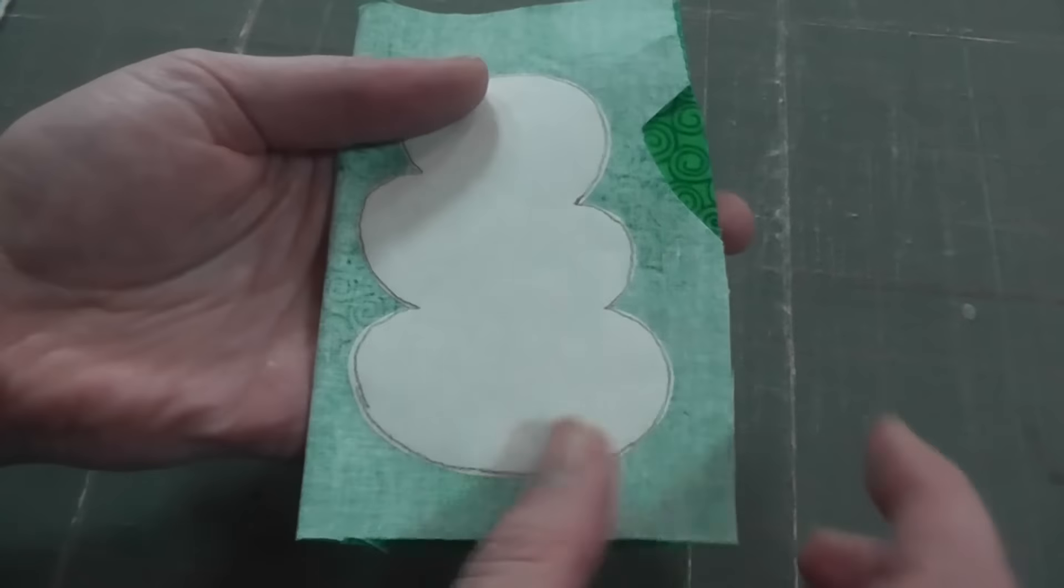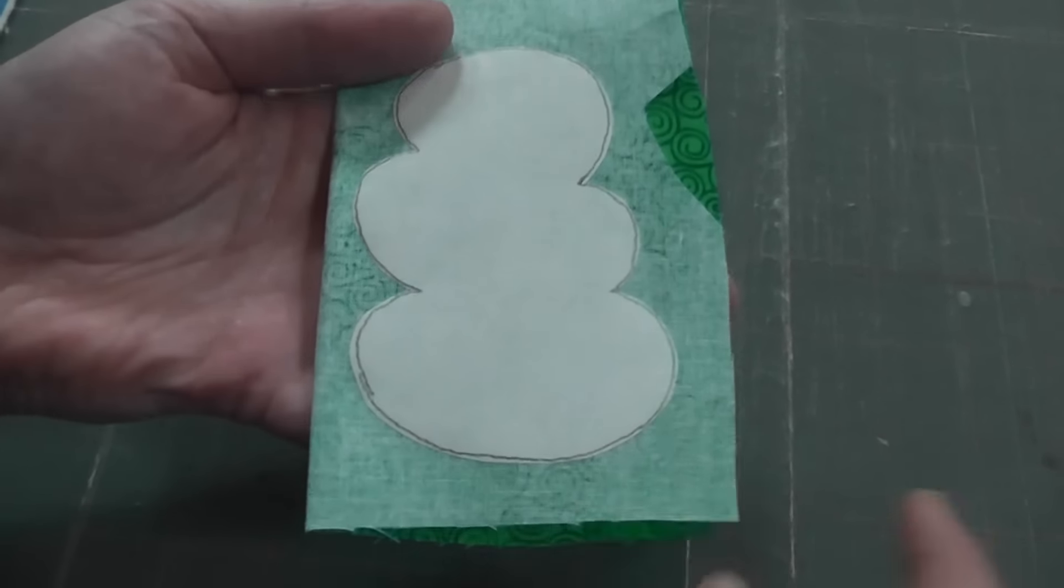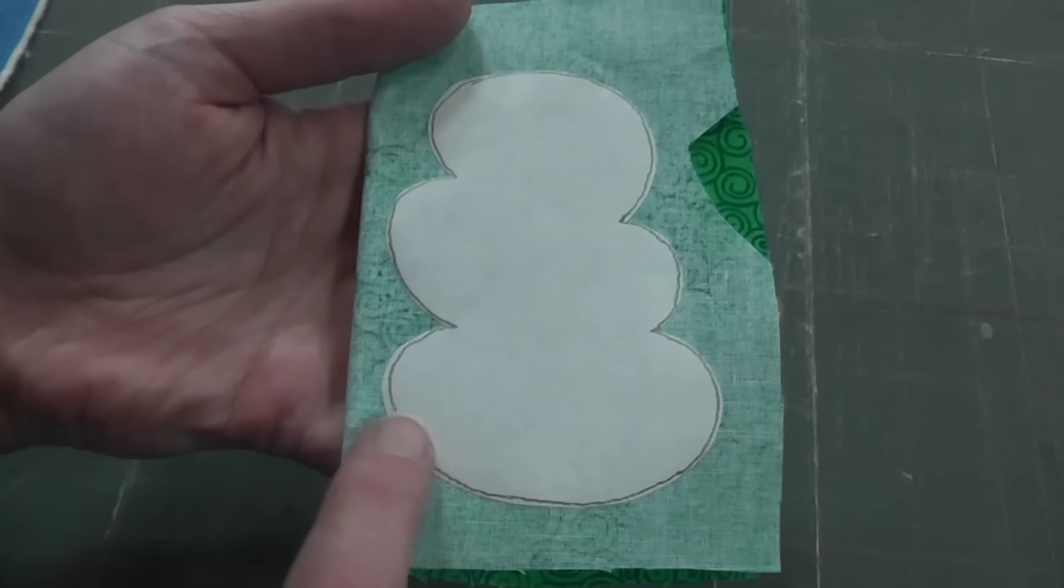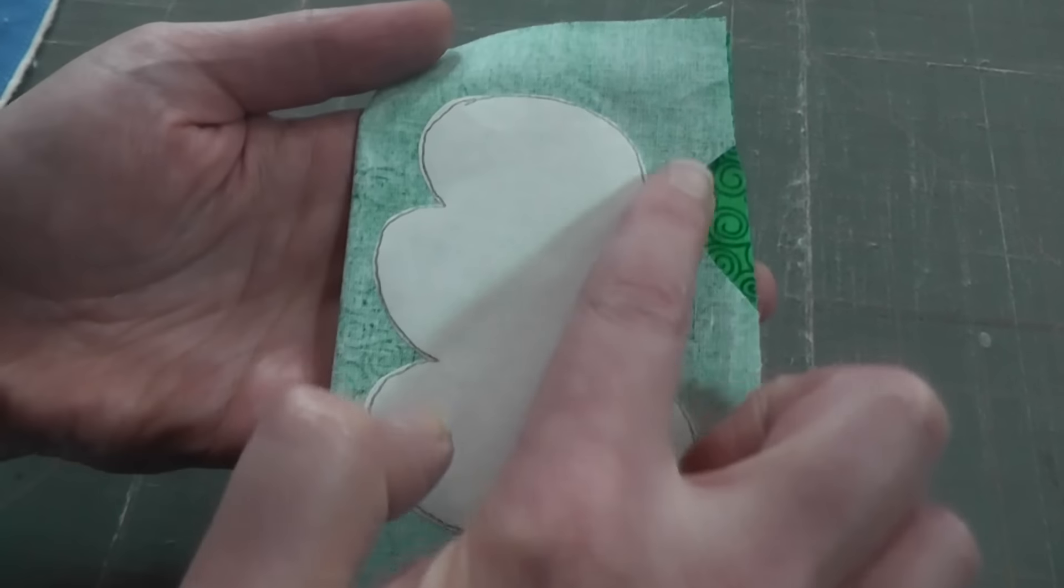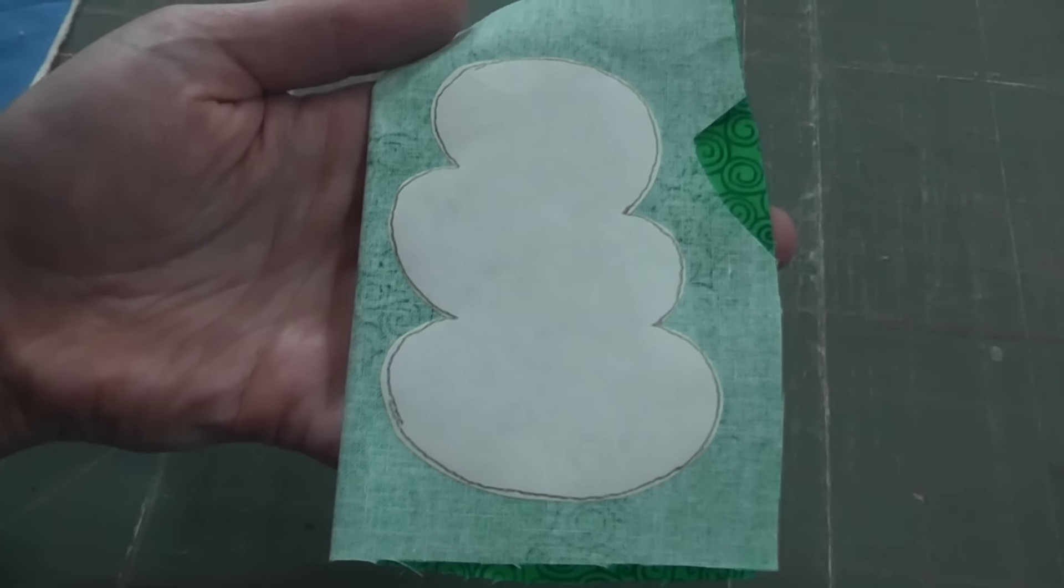I've traced my pattern piece onto freezer paper and stuck it down to the back side of the fabric. Now we're going to go over to the machine and I'm going to use this as a guide and just sew all the way around the edge, all the way around this shape.